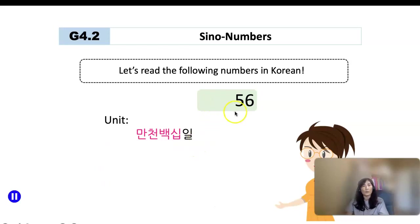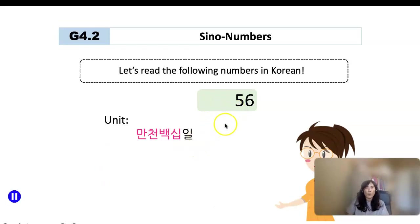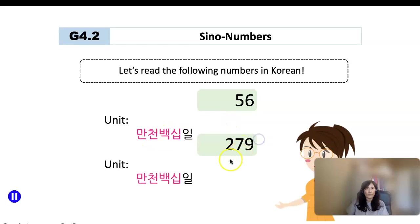Number 56 is 오십육. How about 279? The unit name for 100 is 백. Starting with the digit 2, which is 이, so 279 is 이백칠십구.